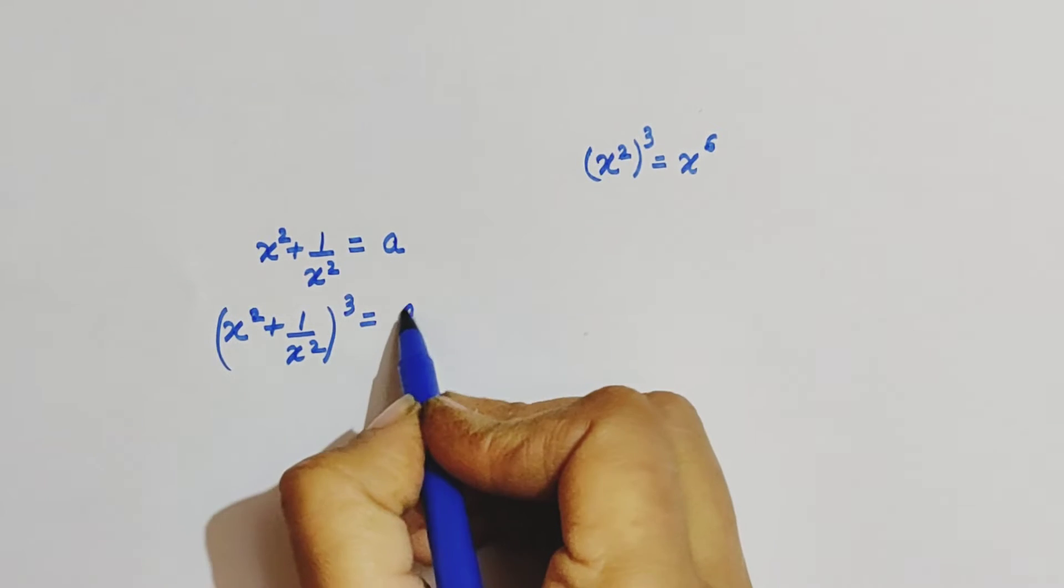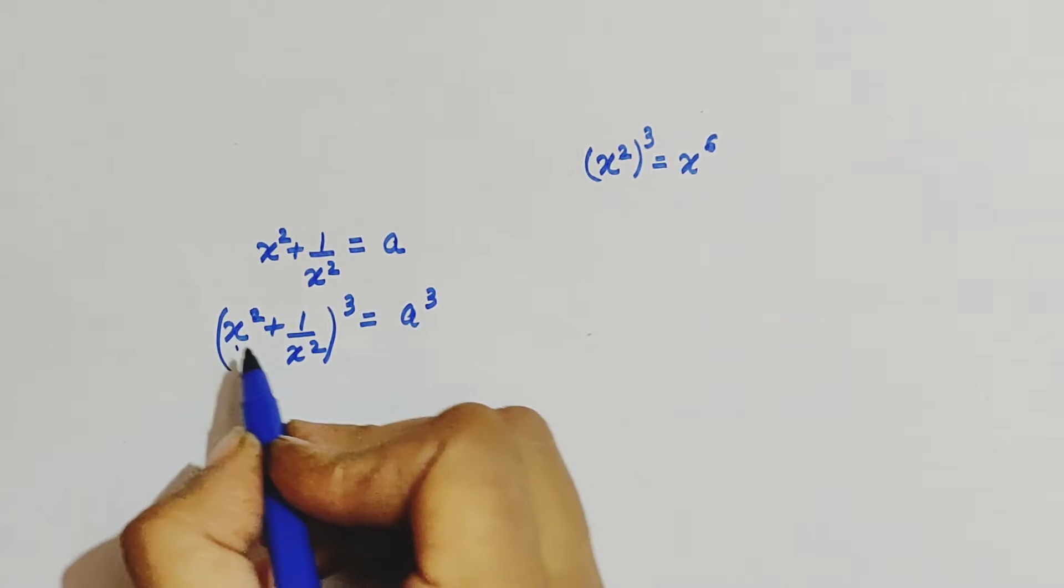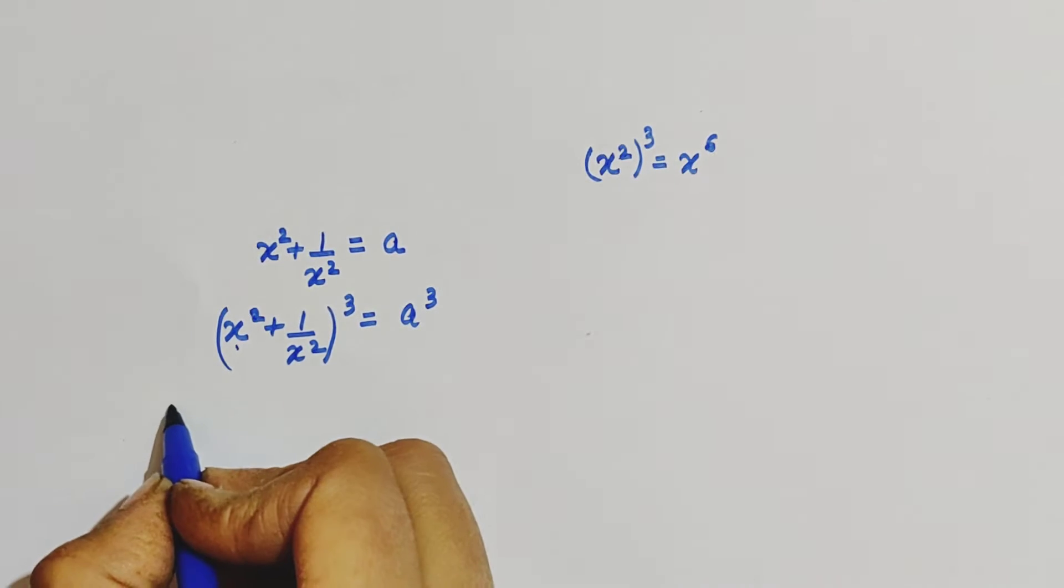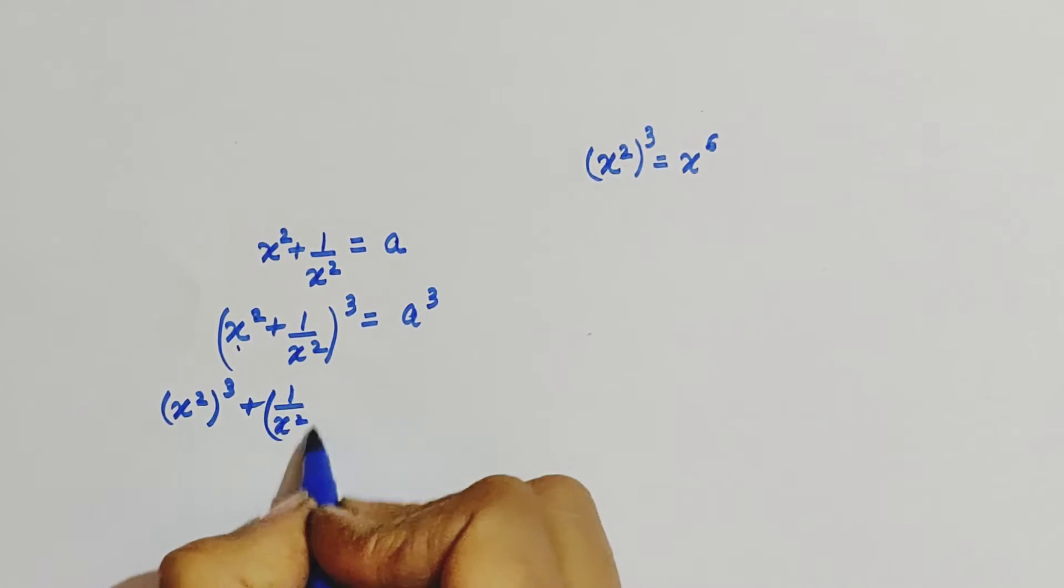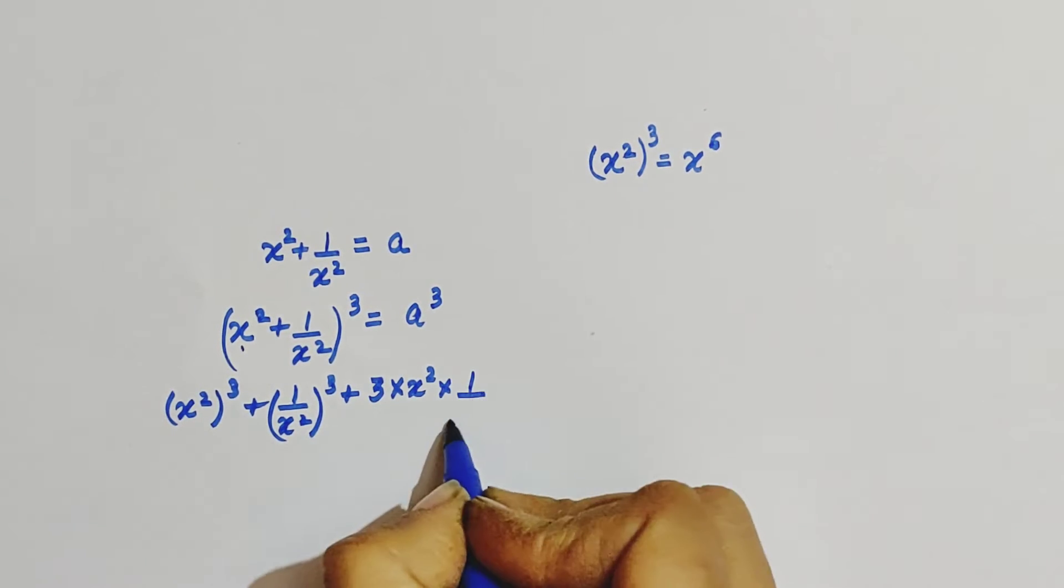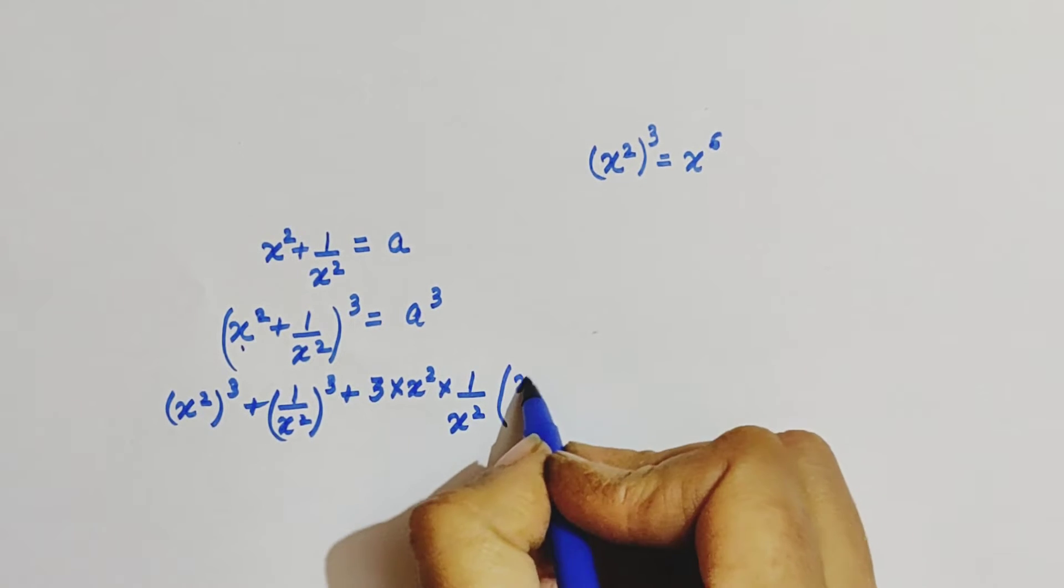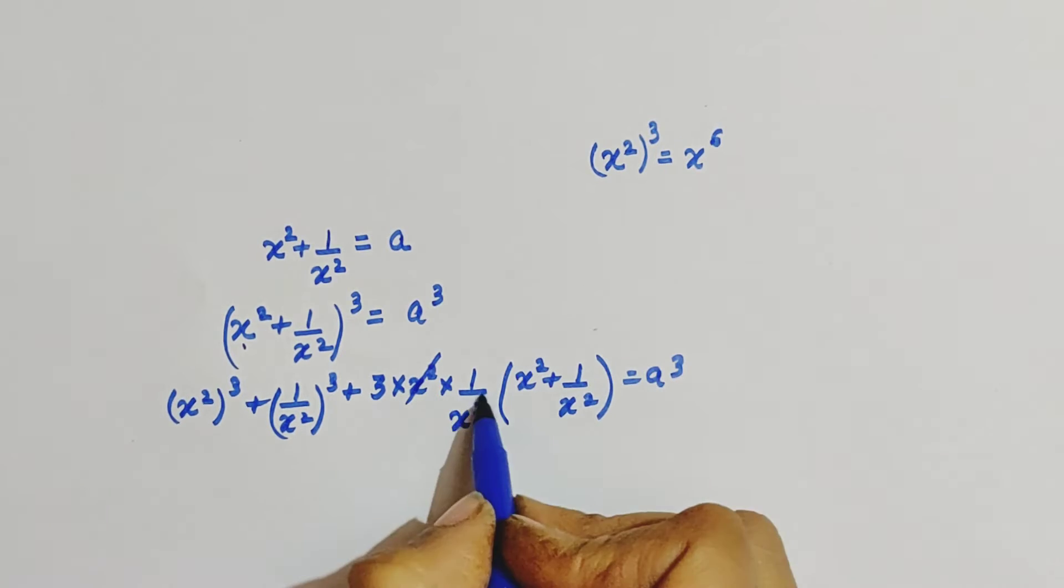Use the a plus b whole cube identity here. Here a is x square and b is 1 over x square. So this will be a cube plus b cube plus 3 times of a into b and a plus b. This is a cube. Now this and this will get cancelled.